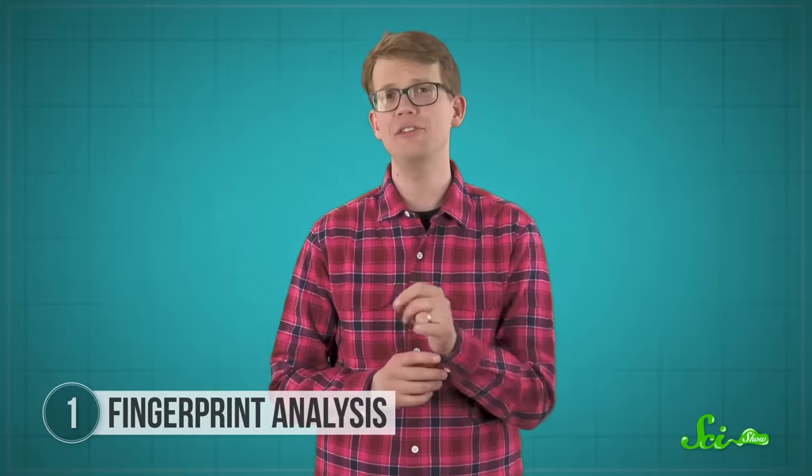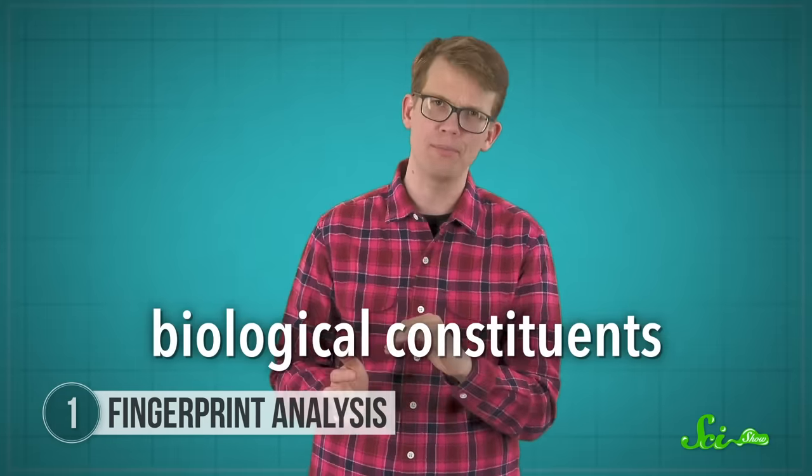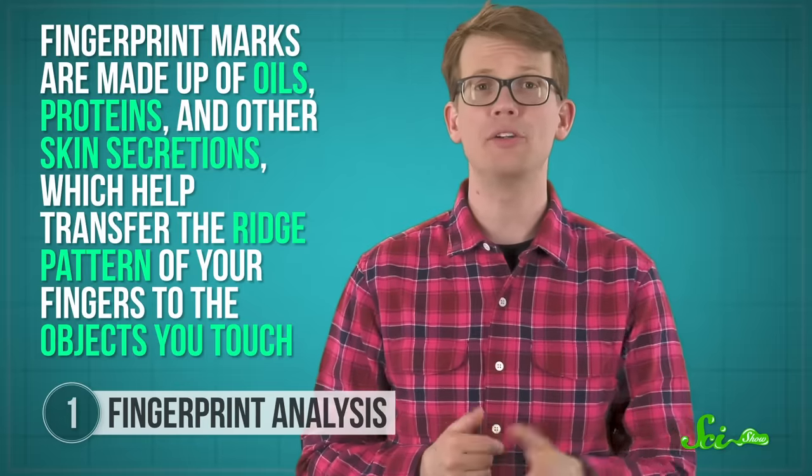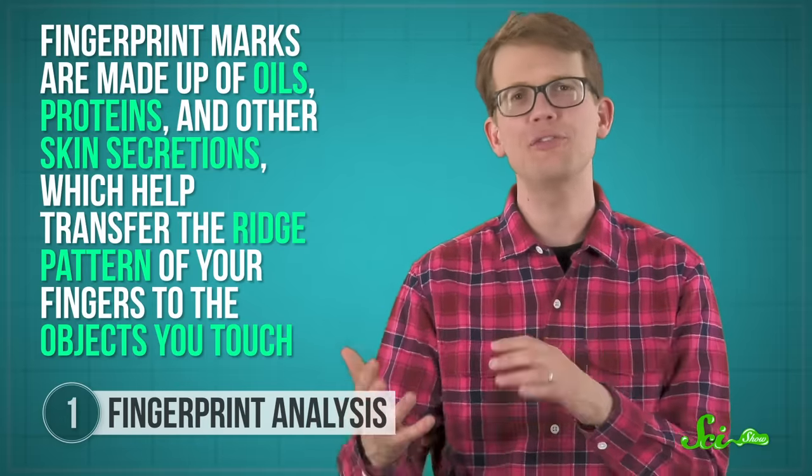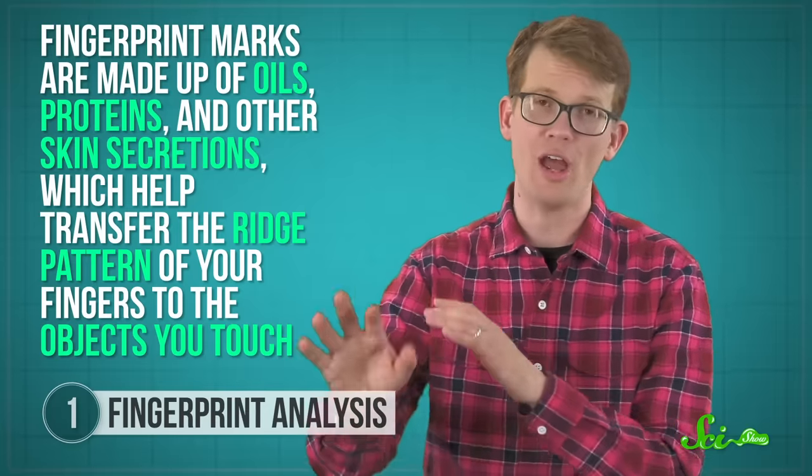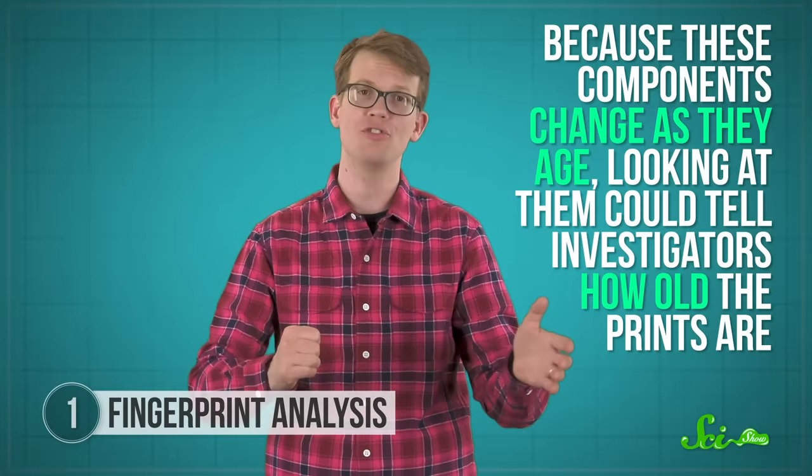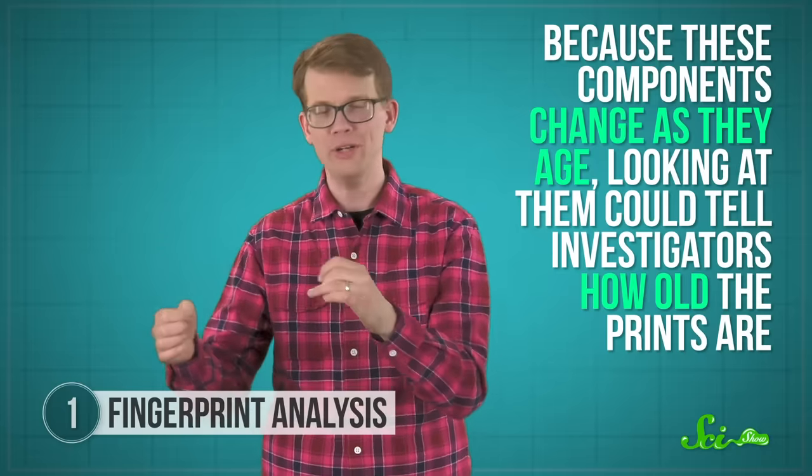But in 2018, scientists in the Netherlands reported that they had created a kind of map of the biological constituents of fingerprints, which could help us figure that out. You see, fingerprint marks are made of oils, proteins, and other skin secretions, which help transfer the ridge pattern of your fingers to the objects you touch. And because these components change as they age, looking at them could tell investigators how old the prints are.